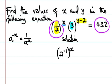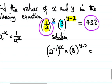So the numerator 1 becomes negative. Then we have that multiplied by 3, with the exponent y minus 2, and the right-hand side is 432.